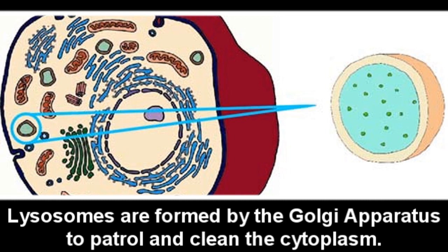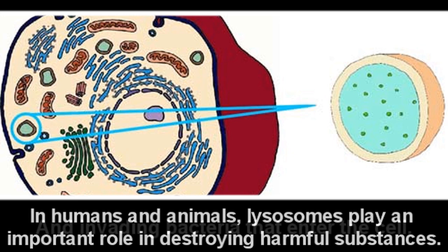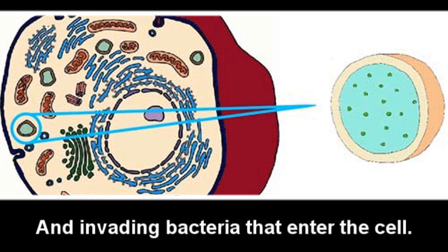Lysosomes are formed by the Golgi apparatus to patrol and clean the cytoplasm. In humans and other animals, lysosomes play an important role in destroying harmful substances and invading bacteria that enter the cell.